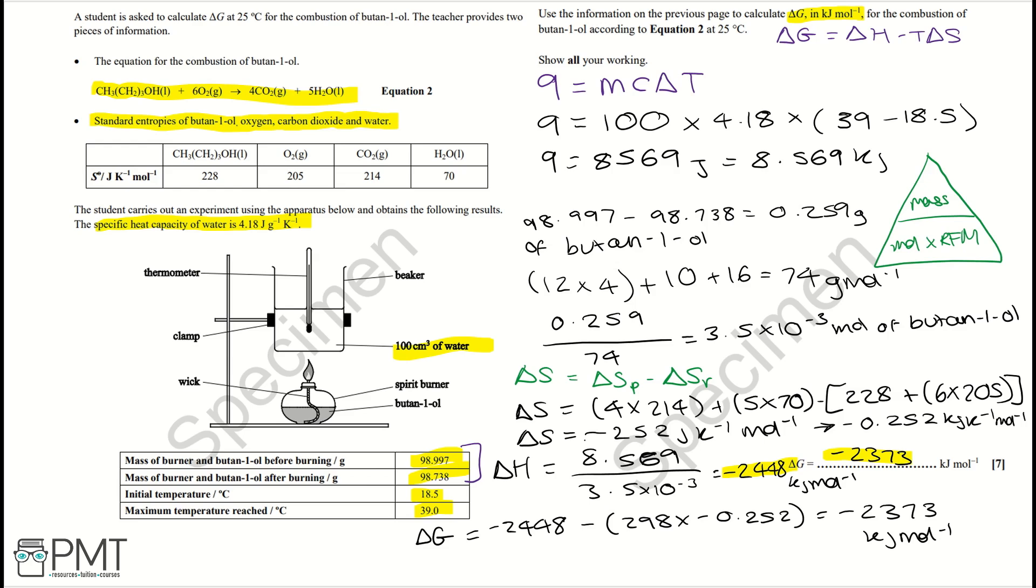And then you get a mark for working out that delta S is your delta SP or your change in enthalpy of products minus your change in enthalpy of reactants. And then you get a mark for working out that minus 0.252.